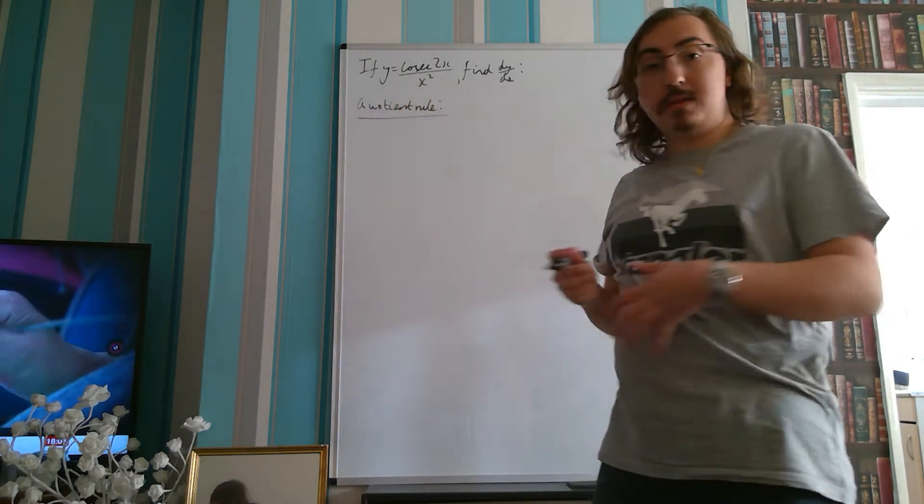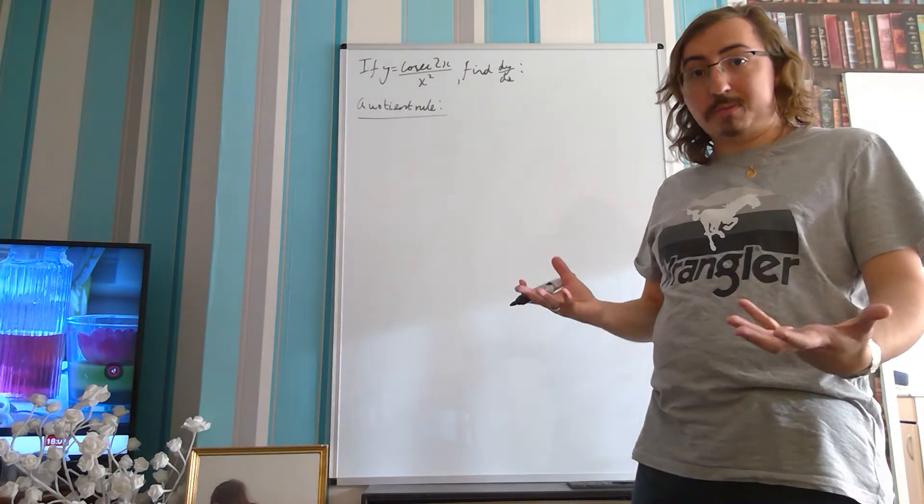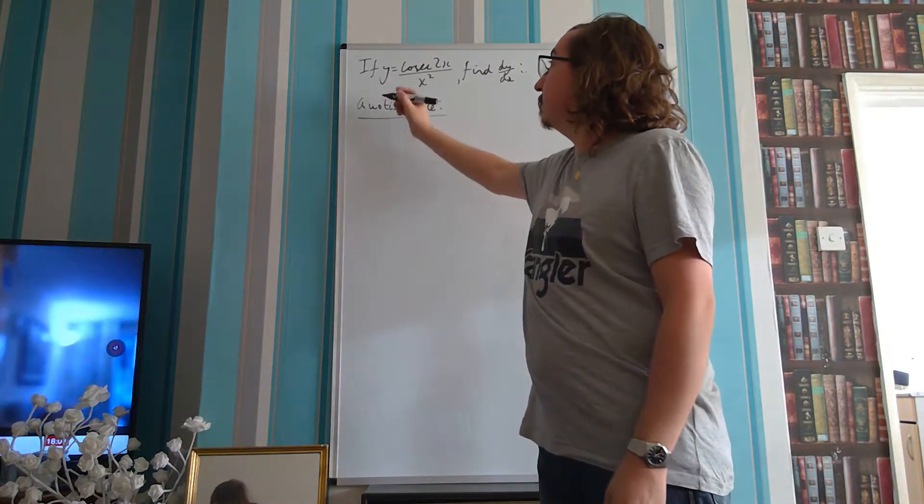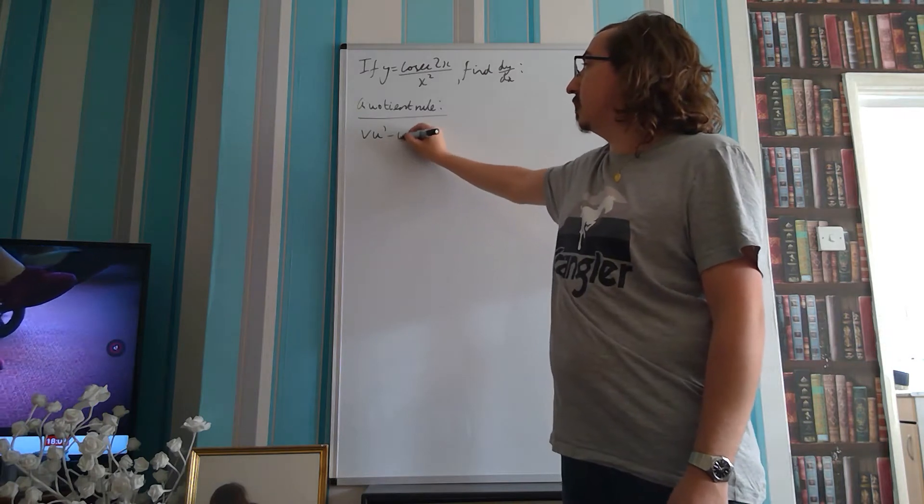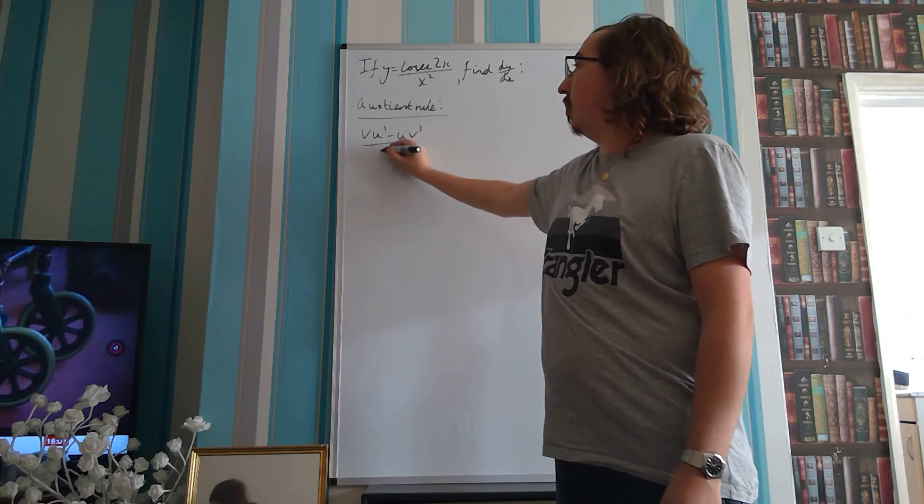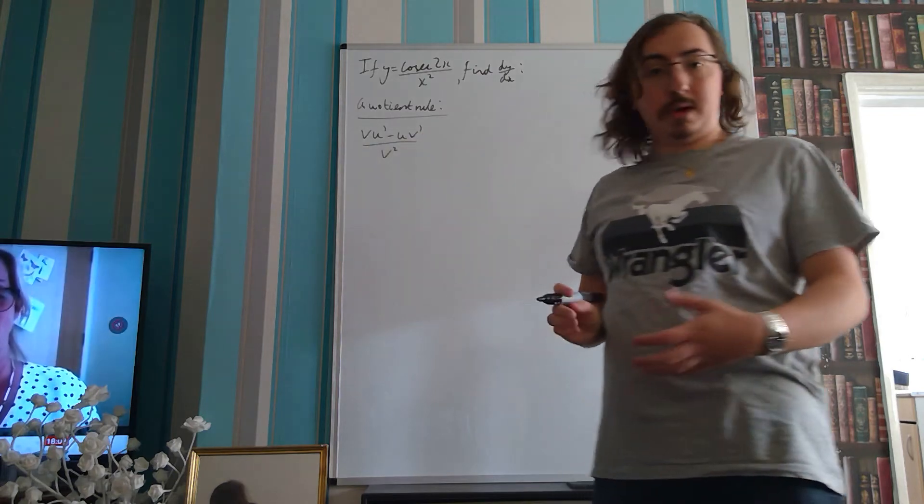Which is, a reminder, on the formula sheet in the formula booklet. And in terms of v and u notation, as you'll often see it, it is v u dashed minus u v dashed all over v squared.